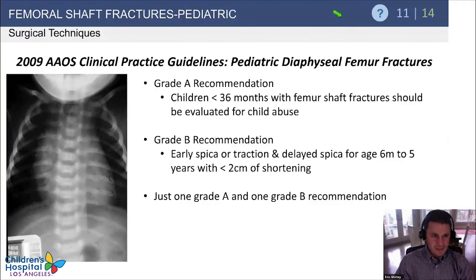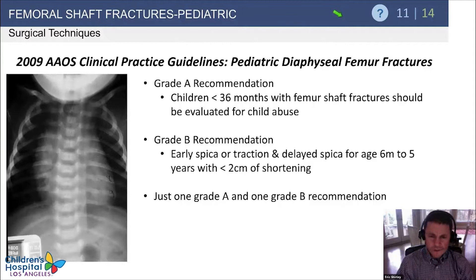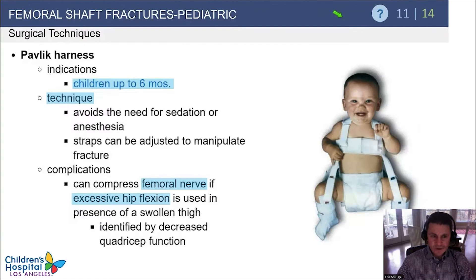The 2009 AAOS guidelines had only one grade A and one grade B recommendation. The grade A recommendation was that children less than 36 months of age with a femoral shaft fracture should be evaluated for child abuse. That doesn't mean calling Child Protective Services on every patient; it means taking a history and physical looking for signs and symptoms of abuse and proceeding accordingly.